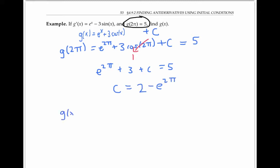So my function g of x is equal to e to the x plus three cosine x plus two minus e to the two pi.